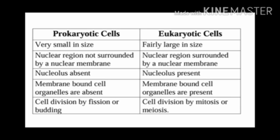But in Prokaryotic cells there is no membrane-like structure. Third point: Nucleolus is absent in Prokaryotic cells, and Nucleolus is present in Eukaryotic cells. As you can see on the display, membrane-bound cell organelles are absent in Prokaryotic cells, but membrane-bound cell organelles are present in Eukaryotic cells.